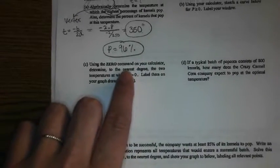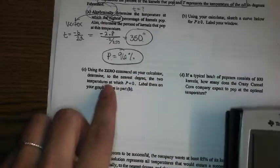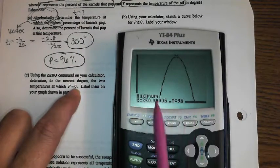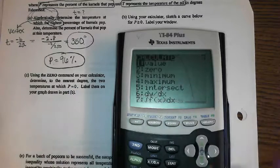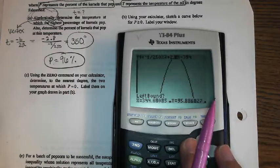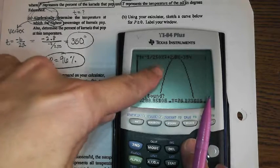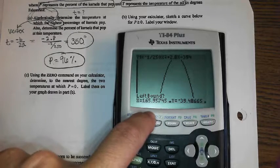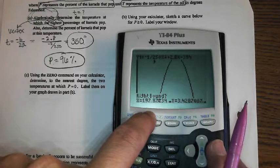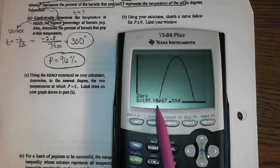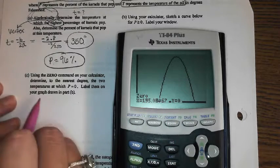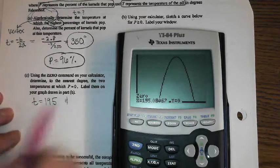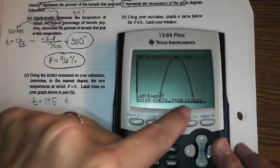Using the zero command on your calculator, determine to the nearest degree the two temperatures at which P equals zero. So, the percentage is zero here and here. Agreed? Okay. So, second trace, find your zeros. We know how to do this, right? So, I'm going to bring that to the left of my first zero, which happens to be off the screen, which is okay. Then to the right of my zero.